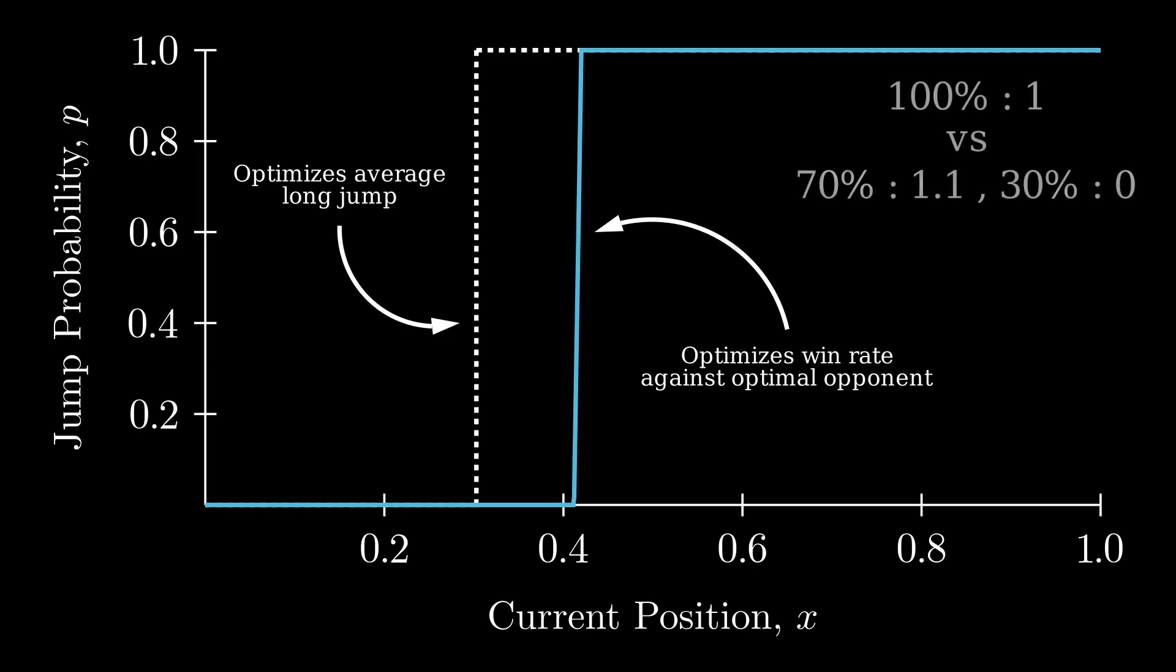Consider two hypothetical strategies. With the first, we always score one, and using the second, we score 1.1 70% of the time, and zero the rest of the time. Despite the second strategy having a smaller average, 0.77, compared to 1, it wins 70% of the time, making it the better option.